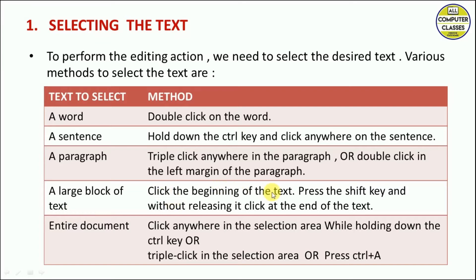To select a large block of text, click at the beginning of the text, press the Shift key, and click at the end — the entire block will be selected. To select the entire document, click anywhere in the selection area while holding Ctrl, or press Ctrl+A, or triple-click in the selection area.